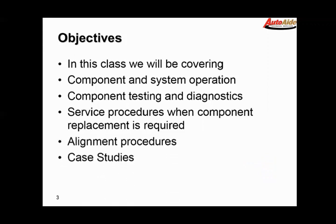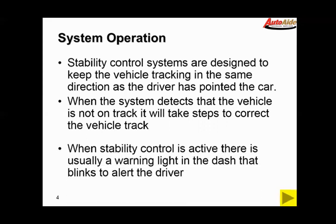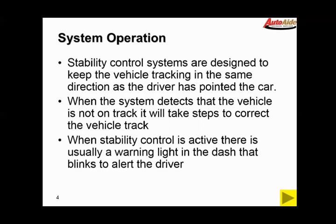System operations: stability control systems are designed to keep the vehicle tracking in the same direction as the driver has pointed the car. Obviously if the car is out of alignment or it's in a skid or something like that, then the vehicle is going to step in and try and get the vehicle back on track. Typically when the vehicle is controlling the car to a certain extent, there should be some kind of a warning light in the dash or something like that to blink to alert the driver.